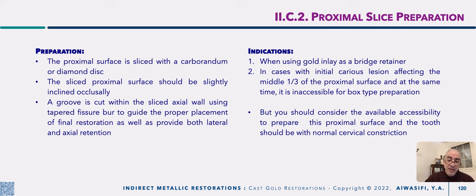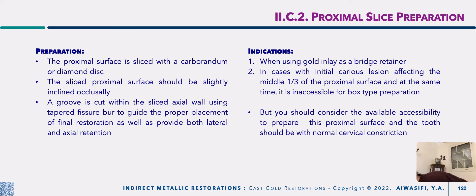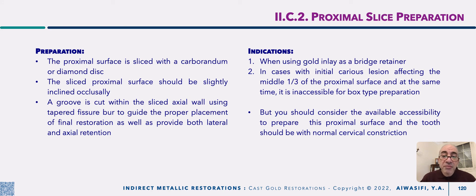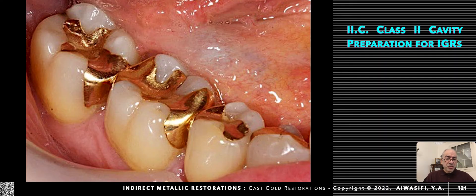It is used mainly when cast gold is indicated as a bridge retainer, then you need to minimize your cutting and conserve as much tooth structure as possible. If it is a carious preparation, it is indicated in cases where your caries is just limited to the middle third of the proximal surface with minimal extension toward the axial. You should consider that the tooth does not have a severely constricted cervical anatomy — it should have a natural or normal cervical anatomy. You should also consider the accessibility — it is much better to prepare mesial surfaces rather than distal far ones, because of the risk of injuring the neighboring tooth with your disc or fine tapered stone, and the lack of proper visibility and accessibility.